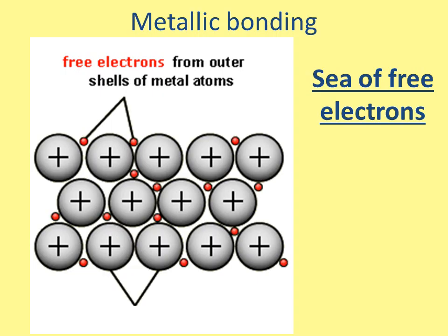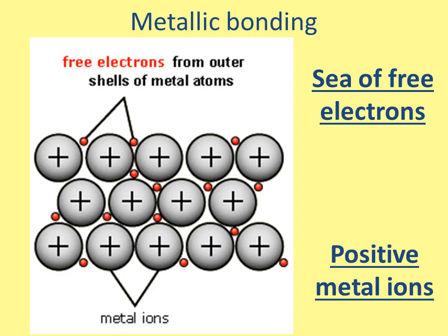Now, if those outer electrons have been taken away from the atom, then what's left are these grey circles, which are the metal ions. And because the electrons are negative, these are going to be positively charged metal ions.